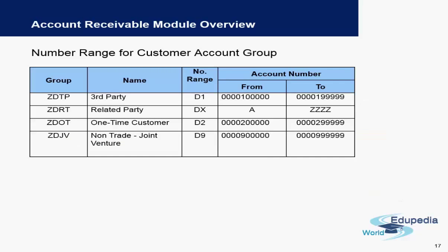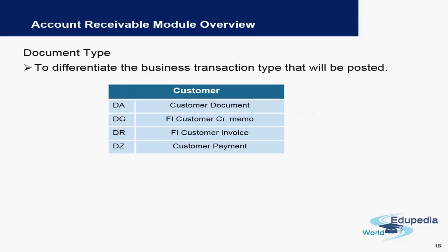This is an example to show how a number range can be defined for different account groups for customers. We also have different document types — for example, you will have a document type to make payment to the customer, and a document type separately for posting a customer invoice into accounting.